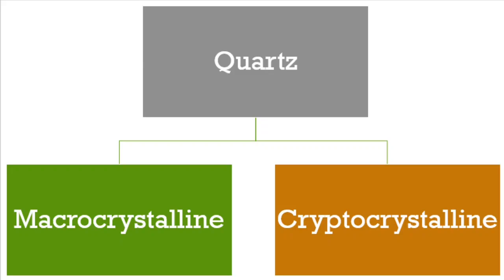Today we will discuss about the quartz family. Quartz can be divided into two categories: macrocrystalline and cryptocrystalline. Cryptocrystalline can also be named as microcrystalline. The general idea of cryptocrystalline or microcrystalline is minerals which are composed of an aggregate of very small crystals or crystal fibers.